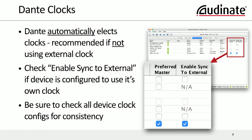We often get asked about clocking, which is a critical issue in any digital audio system. The important thing to note is that Dante automatically takes care of clocking. If you're not using an external clock, go ahead and let Dante's automatic clock selection do its work — it will always provide a really stable clock.